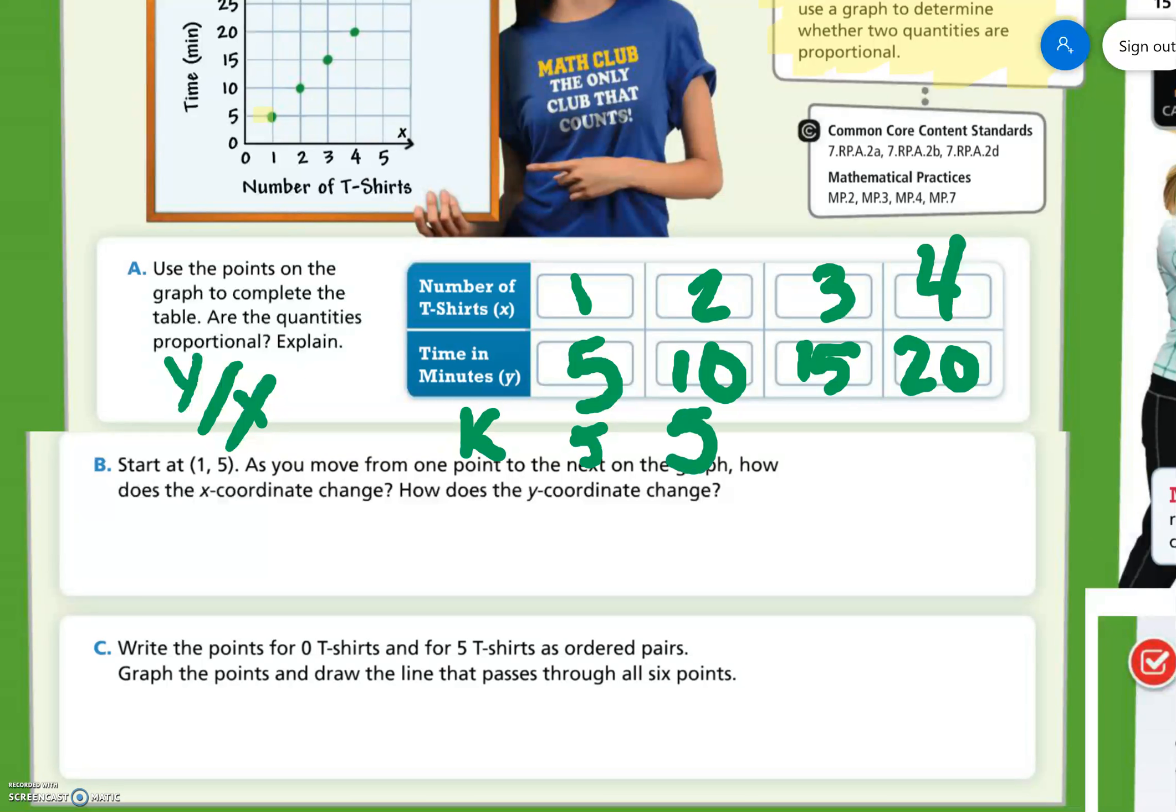10 divided by 2 is 5. 15 divided by 3 is 5. 20 divided by 4 is 5. So yes, they are proportional because they have the same k value.